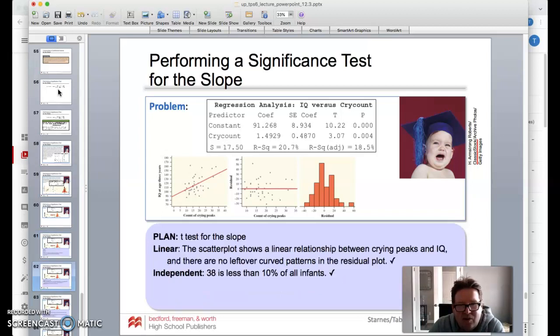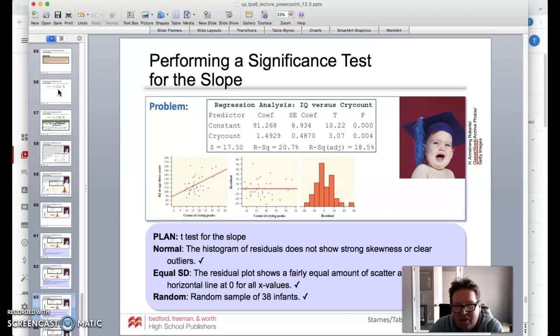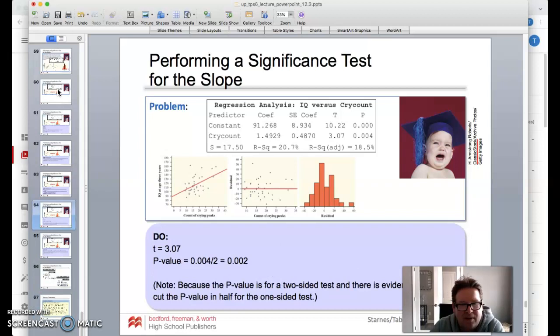So let's get in the plan. We're going to do this t-test for slope. Scatter plot shows it is linear, no leftover curve patterns in the residual plot. It is independent. 38 is less than 10% of all infants, so we're okay there. Normal, it does look like we don't have any strong skewness or clear outliers in the histogram of the residuals. Equal standard deviation, if I look at that standard residual plot, it's fairly equal. It's scattered around the horizontal line of zero, it looks like it. And then, of course, random, yeah, we had a random sample of 38 kiddos.